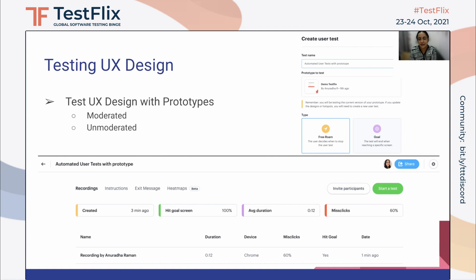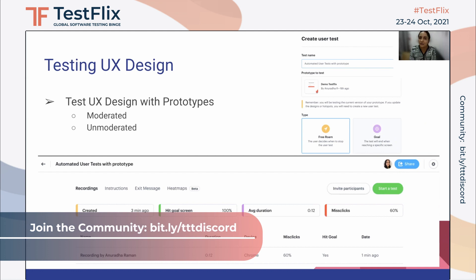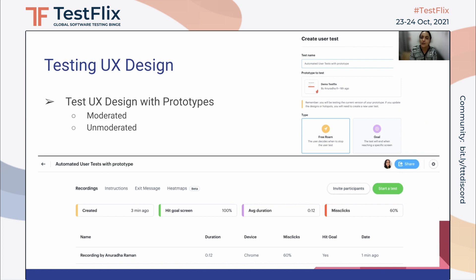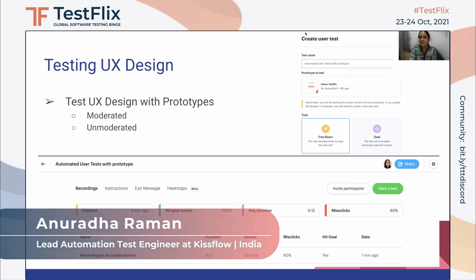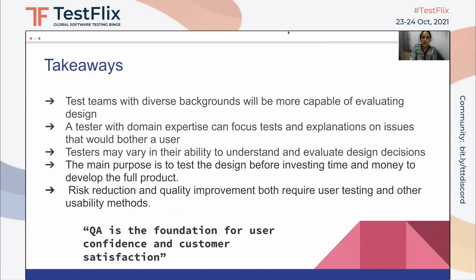To quickly summarize the key takeaways: have a diverse team of testers to perform design reviews and design testing. QA is the best person to identify customer pain points and bring them to the table. If you identify a design flaw at the drawing board stage, it is going to cost 10x times cheaper than catching it at the prototype level or in a fully developed product. To conclude, QA is the foundation for any user experience, user confidence, and customer satisfaction. Thanks for the opportunity.